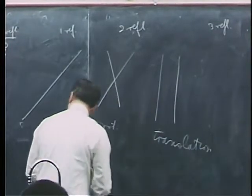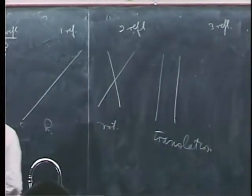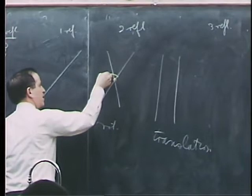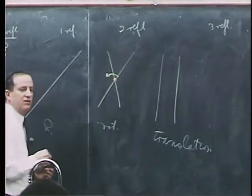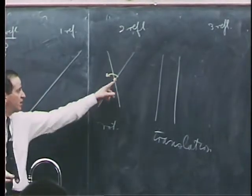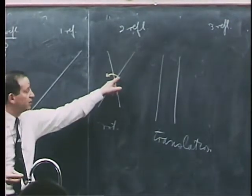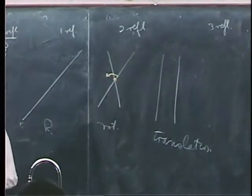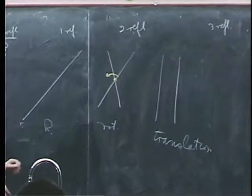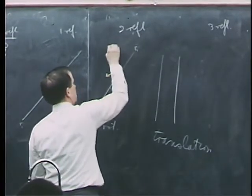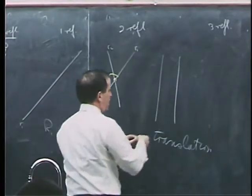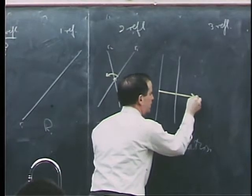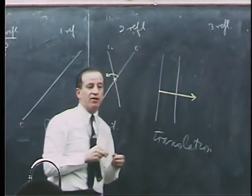The rotation would be indicated by a center and an angle — twice the angle between the mirrors. And in the translation case, it is indicated by a directed arrow.